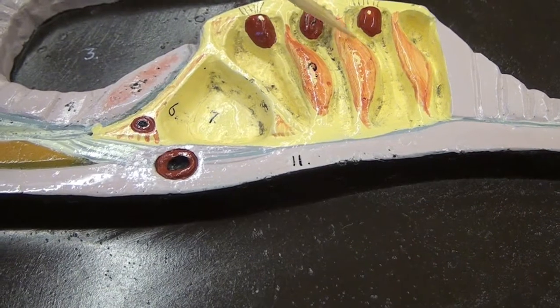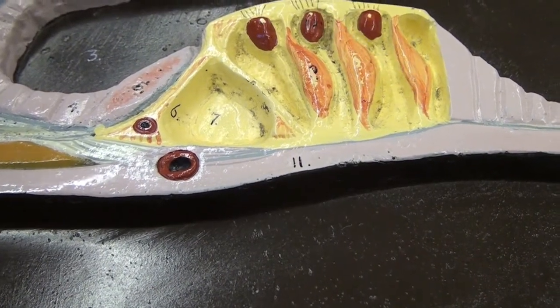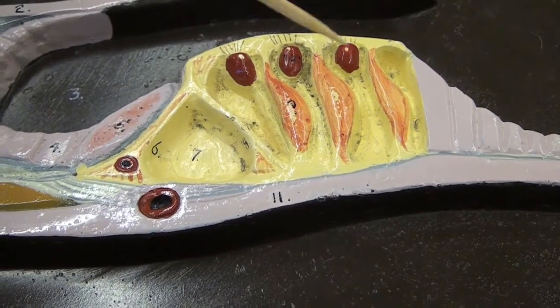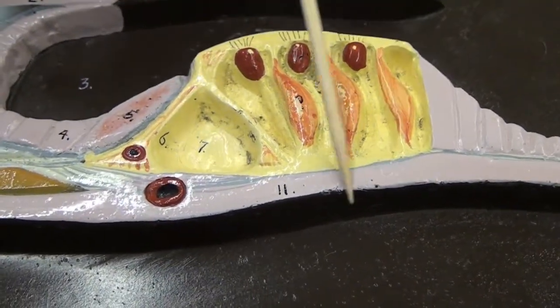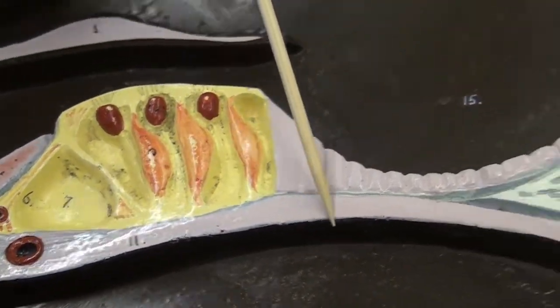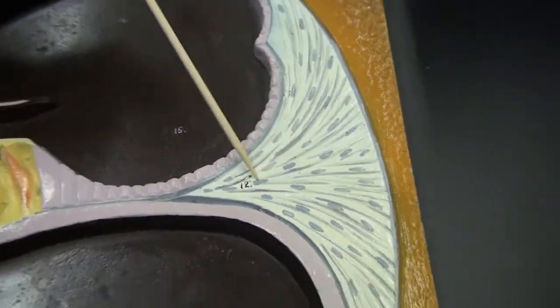These pink structures are supporting cells, the red ones are outer hair cells, bacillar membrane, spiral ligament.